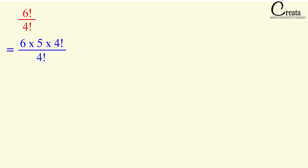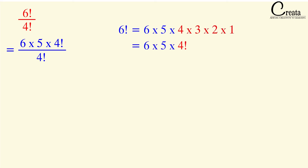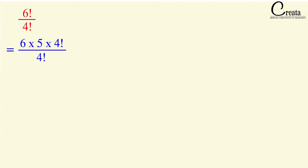Let's take some questions. The first question is 6! ÷ 4!. We rewrite 6! as 6 × 5 × 4!. The 4! in the numerator and denominator cancel out, giving us 6 × 5 = 30.